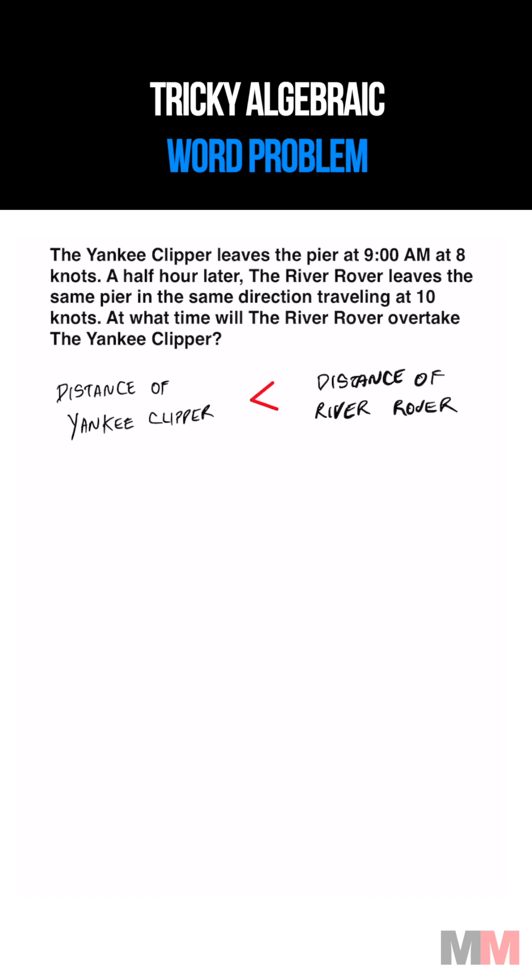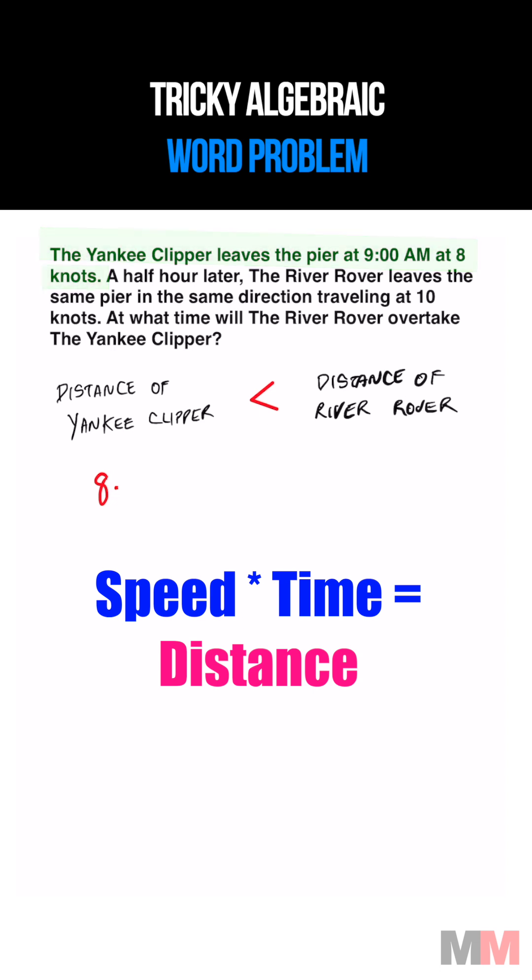To write the expression for the distance of the Yankee Clipper, this says that it travels 8 knots. 8, and we're going to multiply that by the time that is measured in hours to figure out the distance.